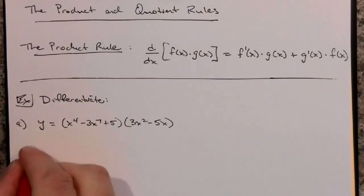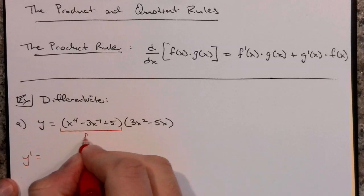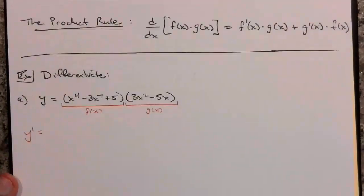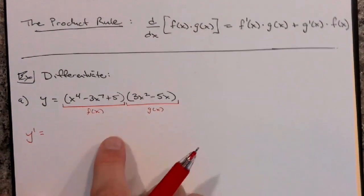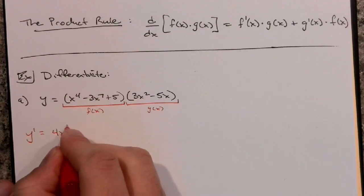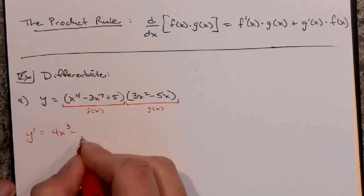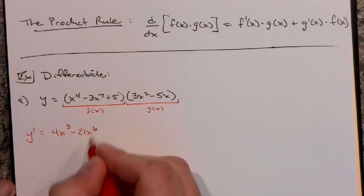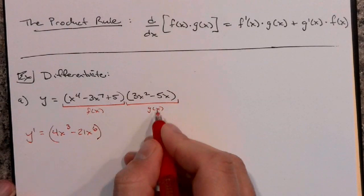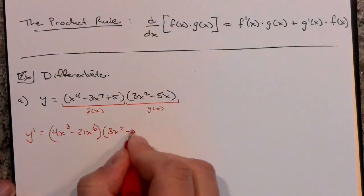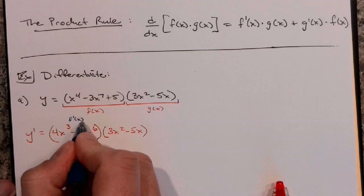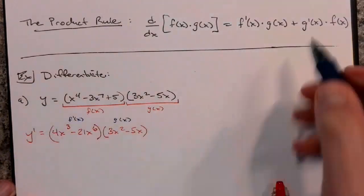When we go to find y', this is f(x) times g(x) — the first function times the second function. To find the derivative, we want the derivative of the first function, f'(x). Bring the four down: 4x³ minus — bring the seven down — 7 times 3 is 21, so x⁶. Derivative of the constant five goes to zero. That's the derivative of the first, times you leave the second alone: times 3x² - 5x. That's the f'(x) · g(x) part of the rule.